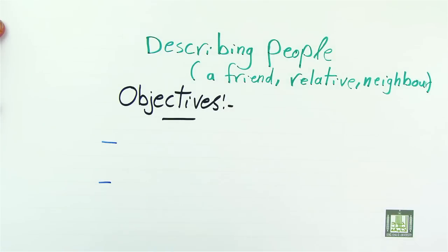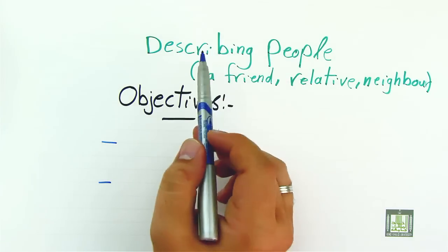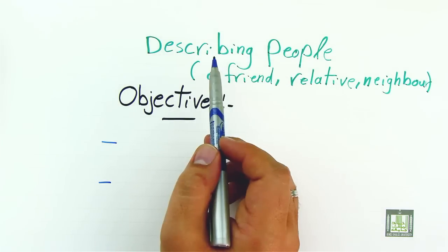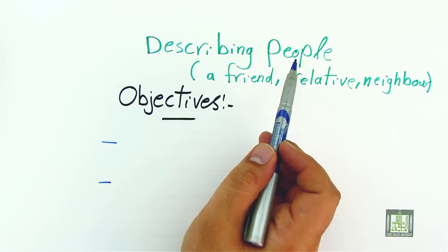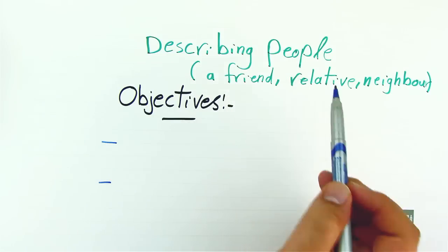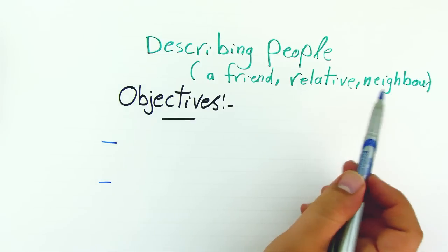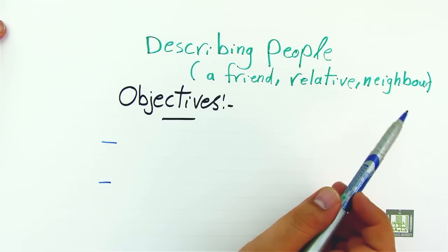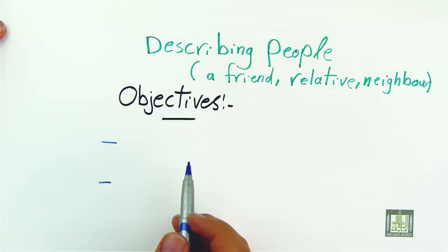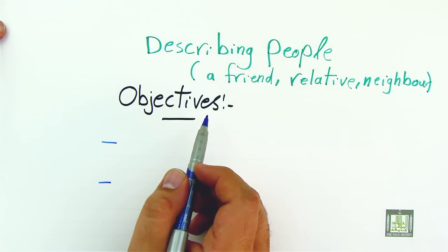Bismillah wa salatu wa salam ala rasulillah. Hello everyone. In today's lesson we're going to talk about how we can describe people. It is about describing people, and these people could be a friend of yours, a relative, a neighbor, or even a cousin or any other person.